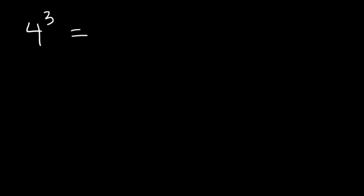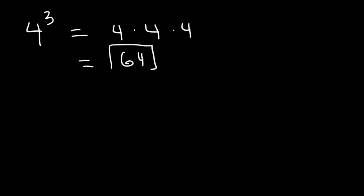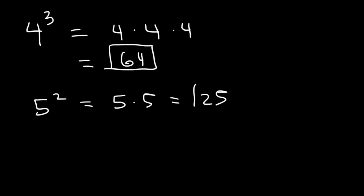Now let's review exponents. What is 4 raised to the third power? When you're dealing with exponents, you're dealing with repeated multiplication. 4 to the third power means that you're multiplying three 4s together. 4 times 4 times 4 is 64. So 5 squared means that you're multiplying 5 two times — 5 times 5 is 25.